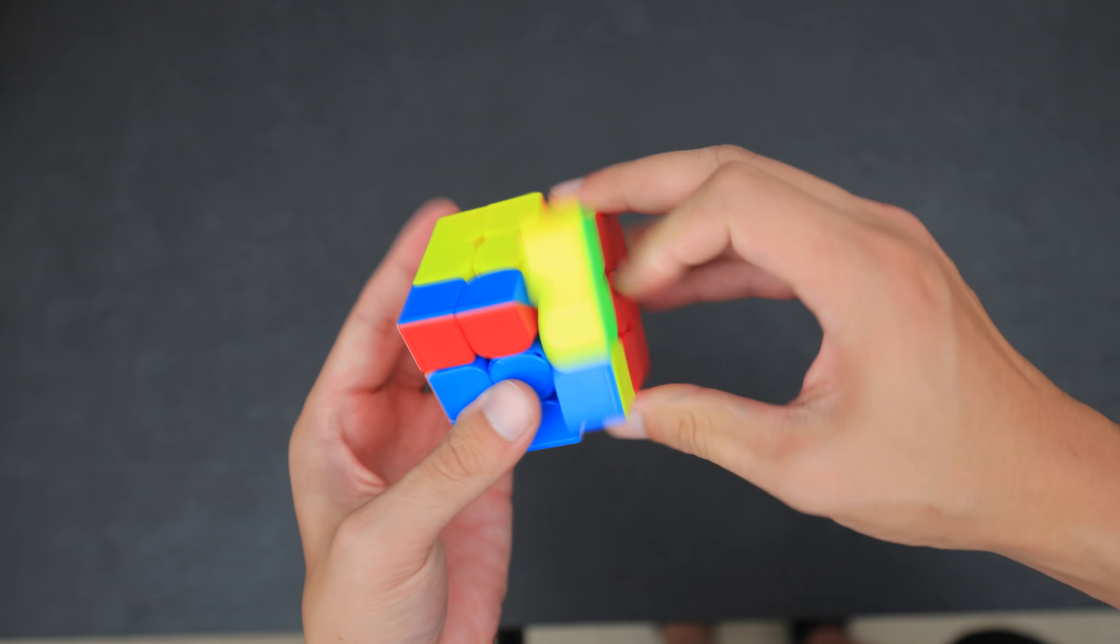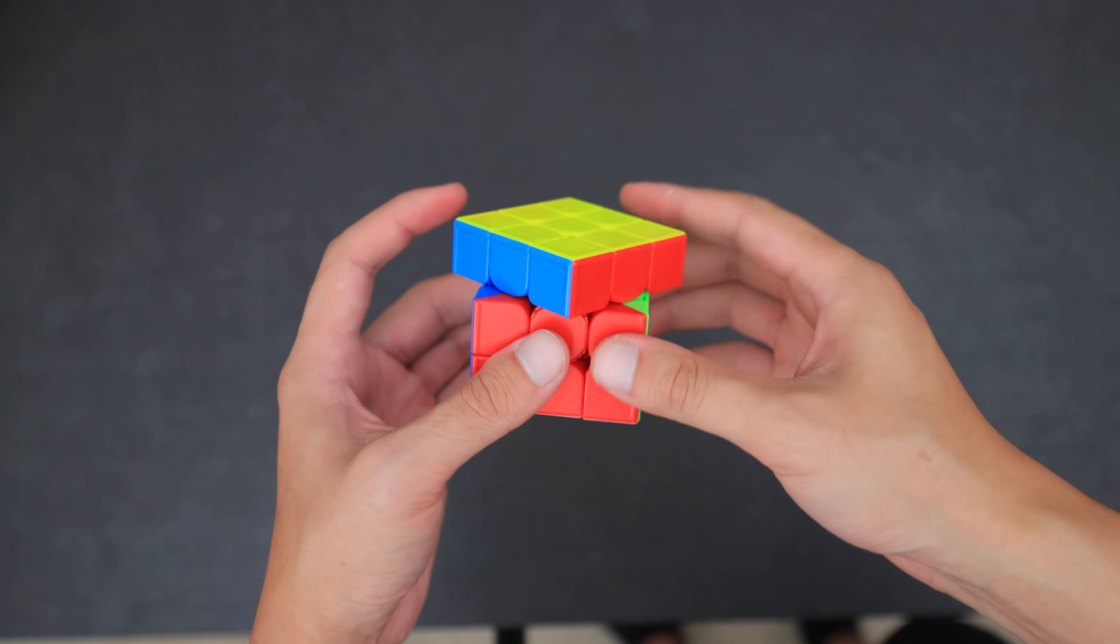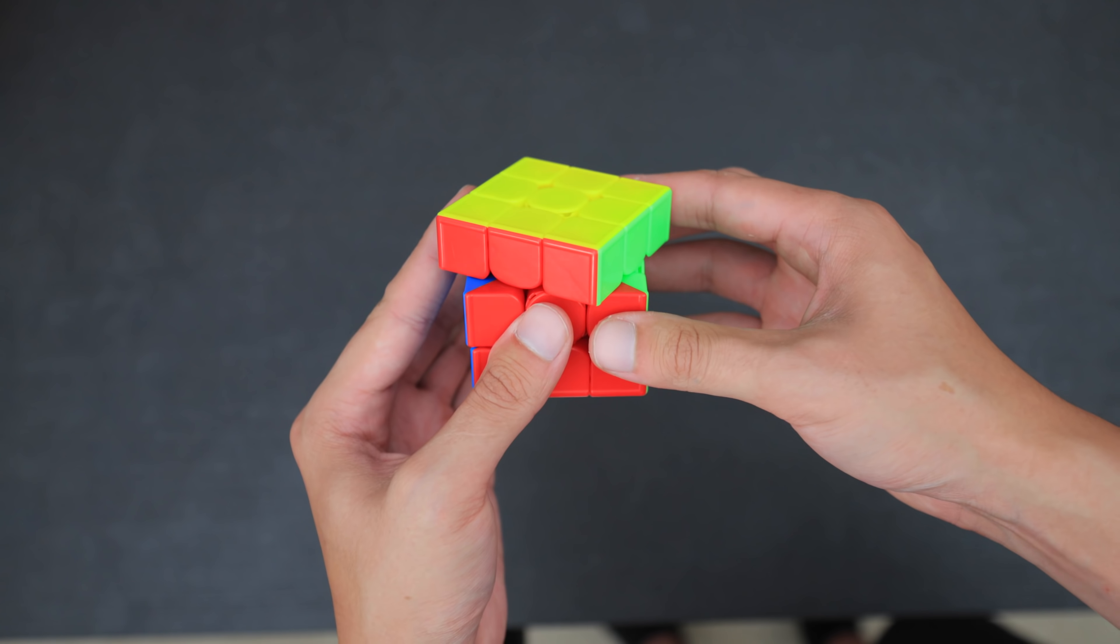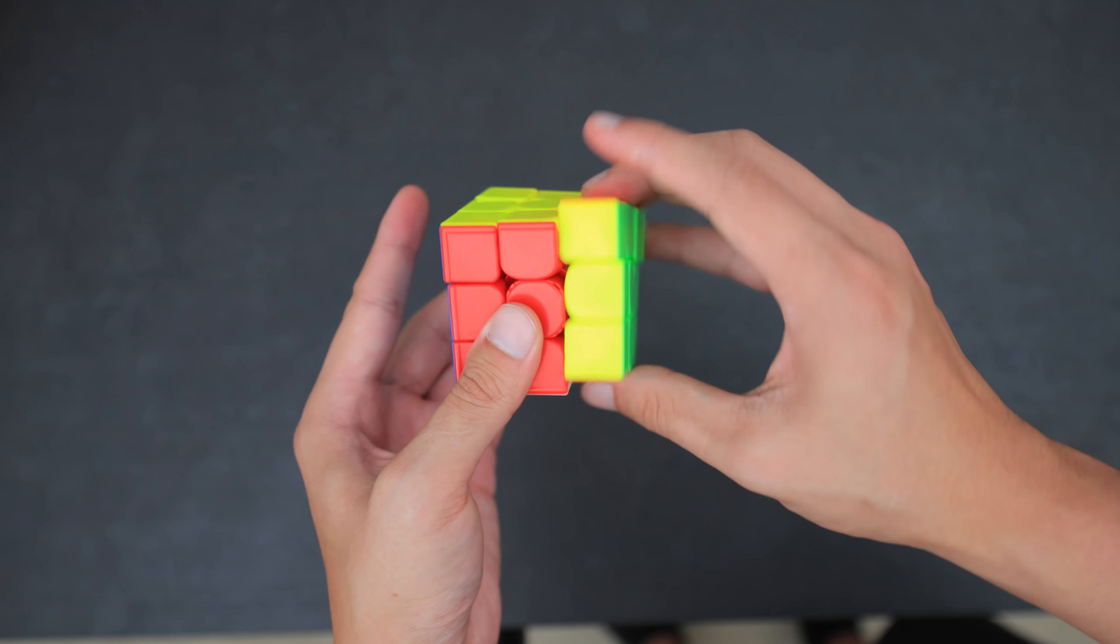Out of the box, the GTS3 is one of the fastest cubes. It is very comparable to the speed of a Huanlong. Corner cutting is what you have come to expect from a flagship 3x3, over 45 for regular cuts and near line to line for reverse.